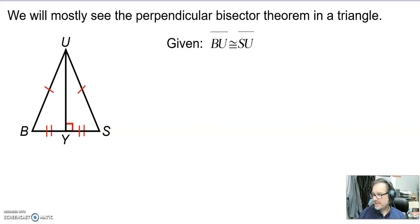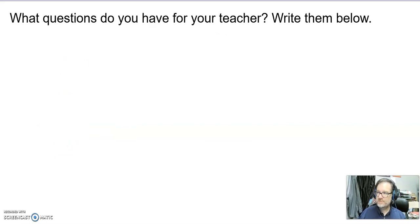We know UY is a perpendicular bisector of BS. So BS gets cut in half and it makes a right angle. If you've got any questions for your teachers, please jot them down. Come in with those questions. Be ready to answer your bell work tomorrow. And patriots, we'll see you when we see you.